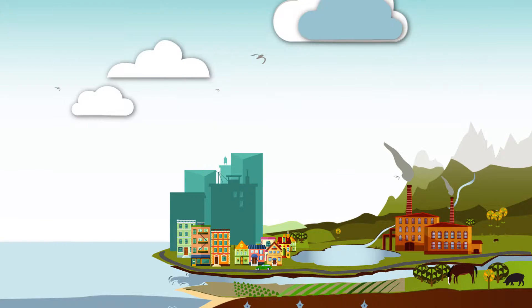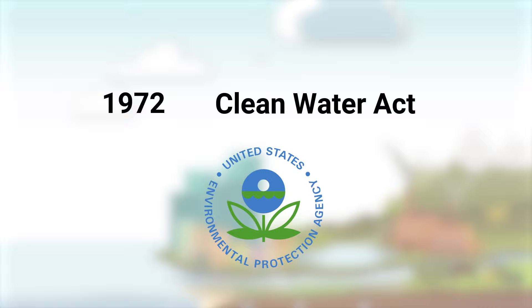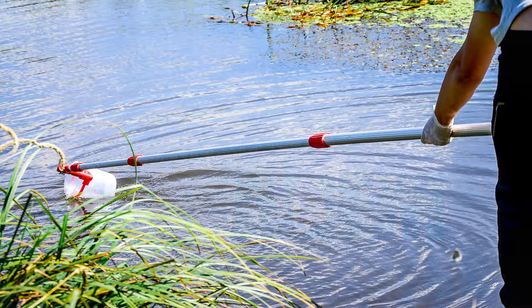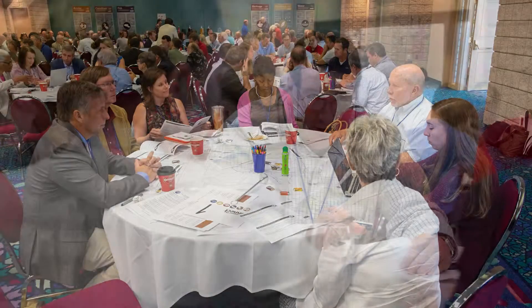Solving the problem of pollution is a long-term process. In 1972, the Clean Water Act was signed into law across the country, forming the Environmental Protection Agency, which develops rules and works with states to keep our waters clean. State agencies, like the Alabama Department of Environmental Management, play a big role in sampling lakes, rivers, and streams to identify which ones are polluted. They then develop plans to help clean them in conjunction with local counties and cities.